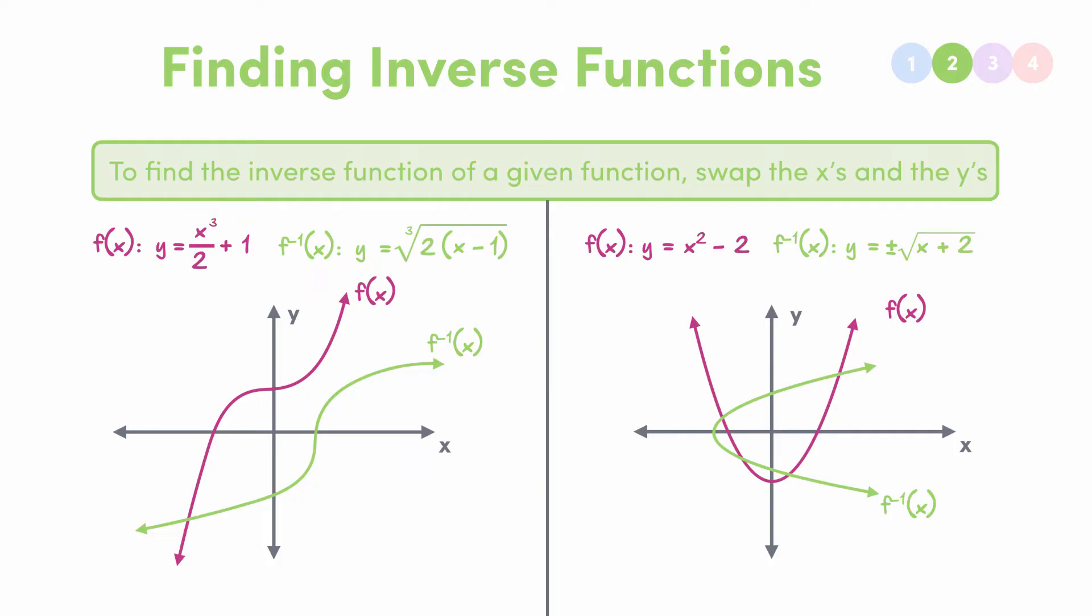There's a little bit of a problem though because, as you can see, this line isn't actually a function. Remember, a function can only have one y value for each x value, and to test if something is a function we use the vertical line test. Clearly this x value has more than one y value, so technically it's not an inverse function, you could call it an inverse relation, but I'll touch more on this function or not a function business in the next video. So that's a little bit of sizzle, get excited.